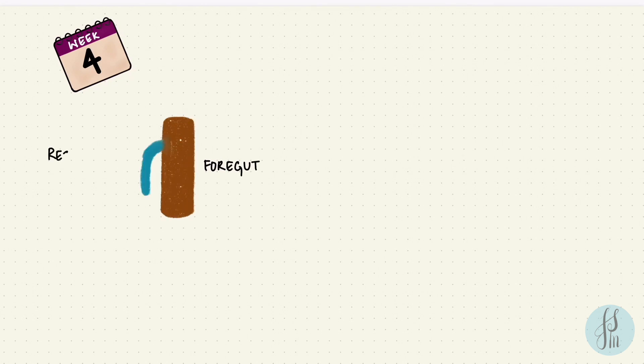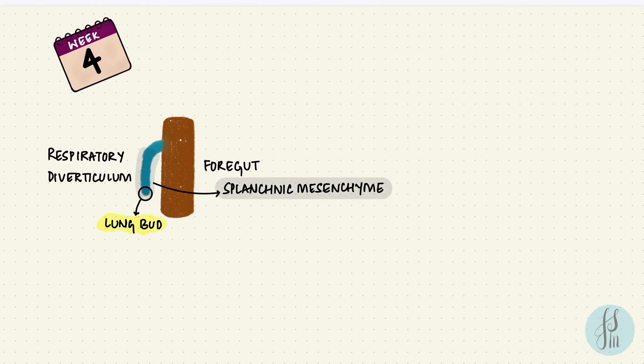We start at week four with the primitive gut tube. From the upper cranial portion, there's an outgrowth — a diverticulum — the respiratory diverticulum. The lower caudal portion of this diverticulum is going to form the lung bud. The diverticulum is surrounded by splanchnic mesenchyme to form all those mesodermal derivatives we talked about. The upper portion contributes to the trachea and larynx, while the lung bud forms the respiratory tree.